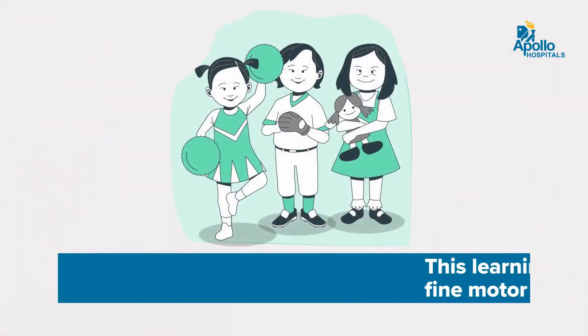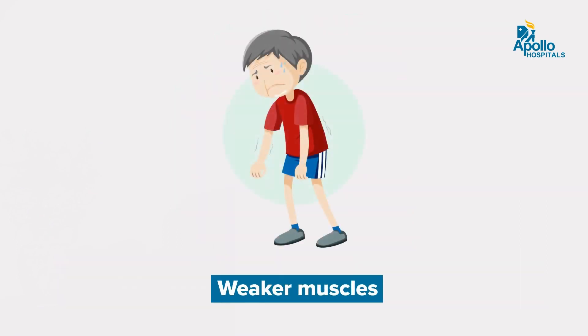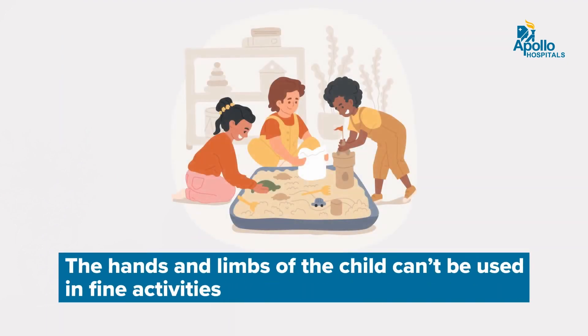These two aspects of learning disability are mostly due to the impairment in the fine motor skills that the children have. The impairment in fine motor skills is because of the loss of tone in the muscles — they have weaker muscles. So the child is not able to do any fine activity with his hands or limbs, and generally does gross activities instead.